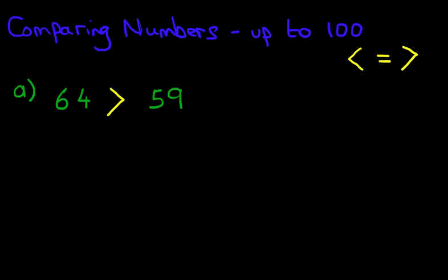In fact, let's write that down. 64 is greater than 59. You can say greater than, you can say more than. It means the same thing. And don't forget, we always do a final check just to make sure we got it right. Which way is the arrow pointing? It's pointing to 59. So it's pointing to the smaller number. So that is correct.